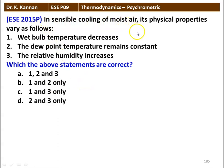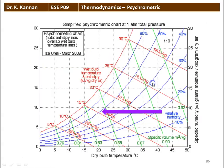Next question: in sensible cooling of moist air, physical properties vary as follows — wet bulb temperature decreases, dew point temperature remains constant, relative humidity increases. The correct answer is all three statements are correct. During sensible cooling, dew point temperature remains constant along a horizontal line; wet bulb temperature decreases from approximately 23 to 22 degrees; and relative humidity increases from approximately 20% to 80%.